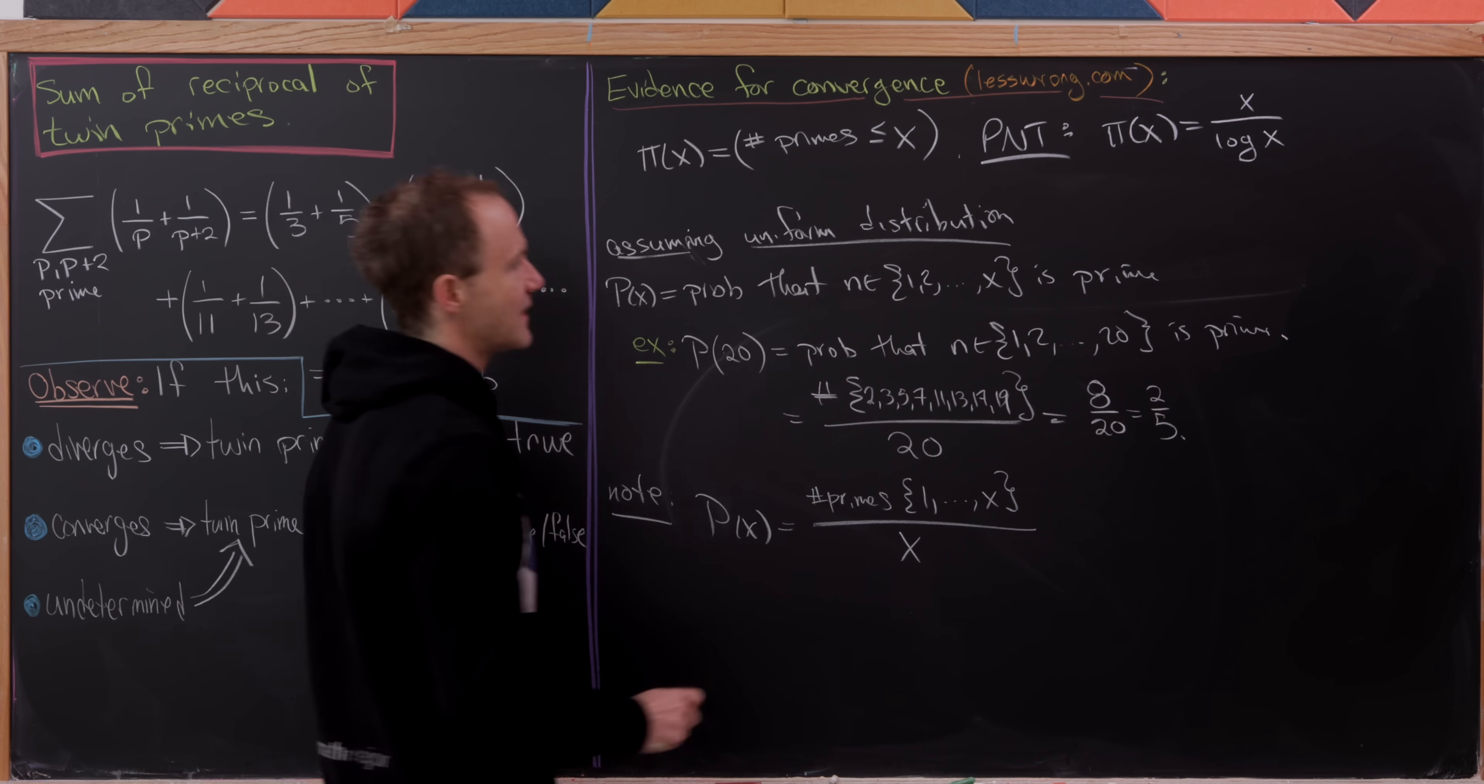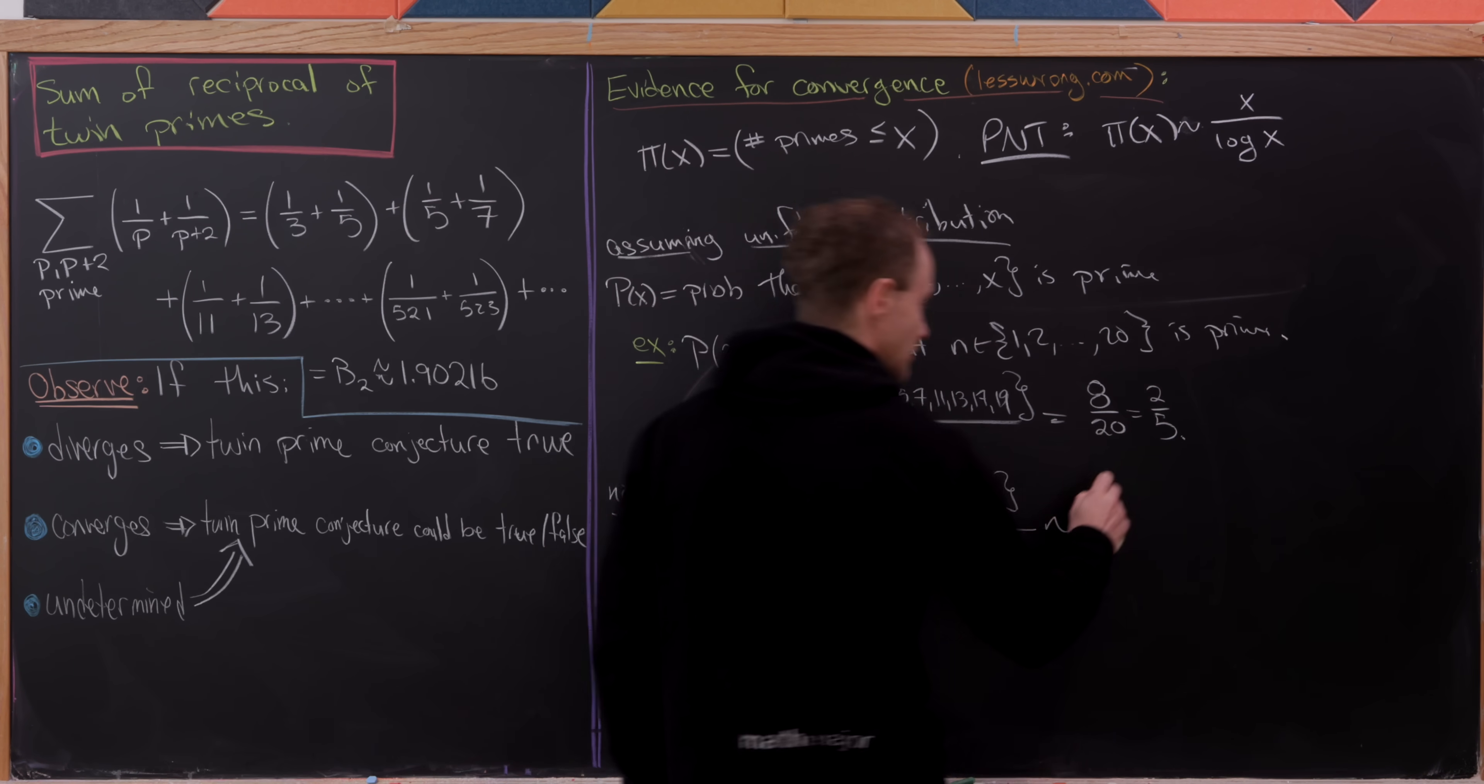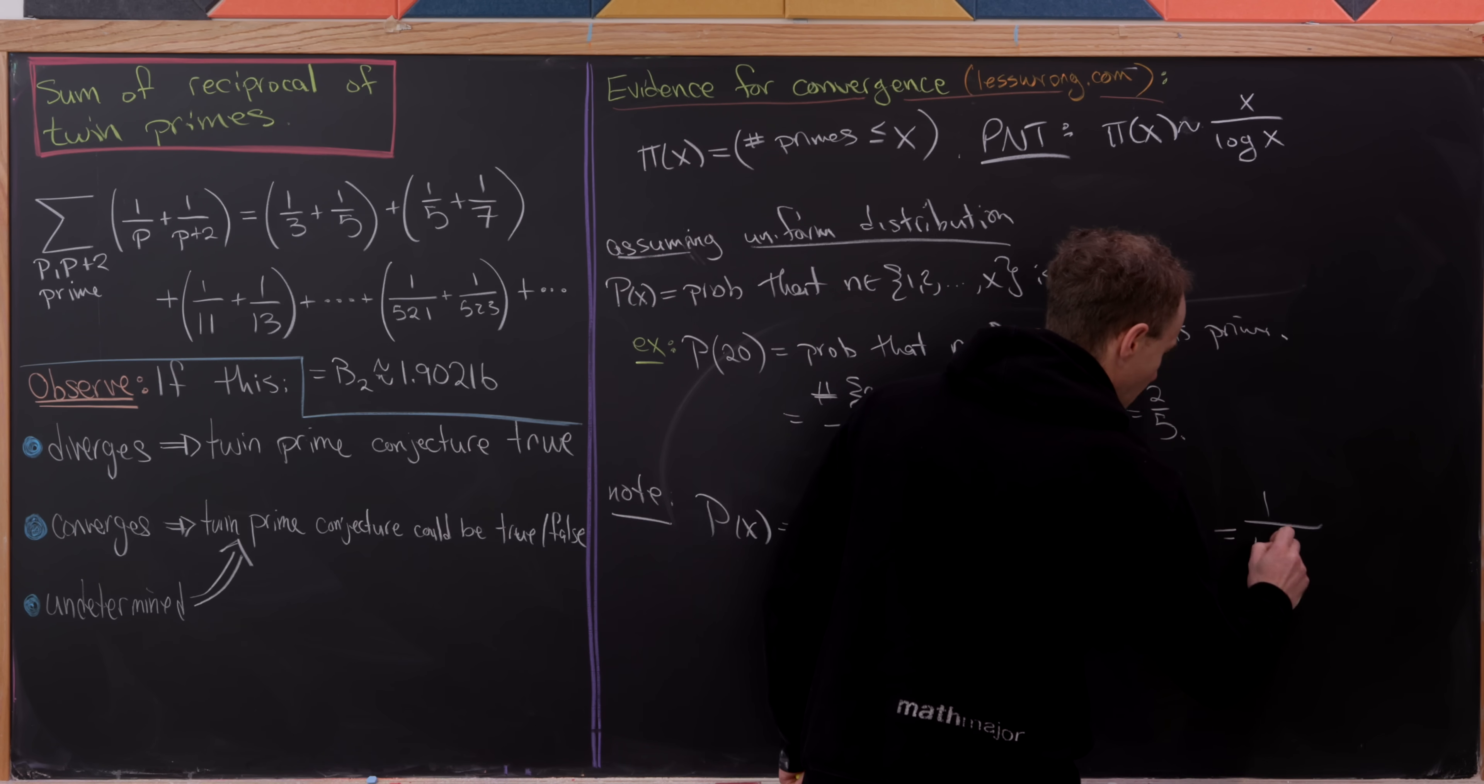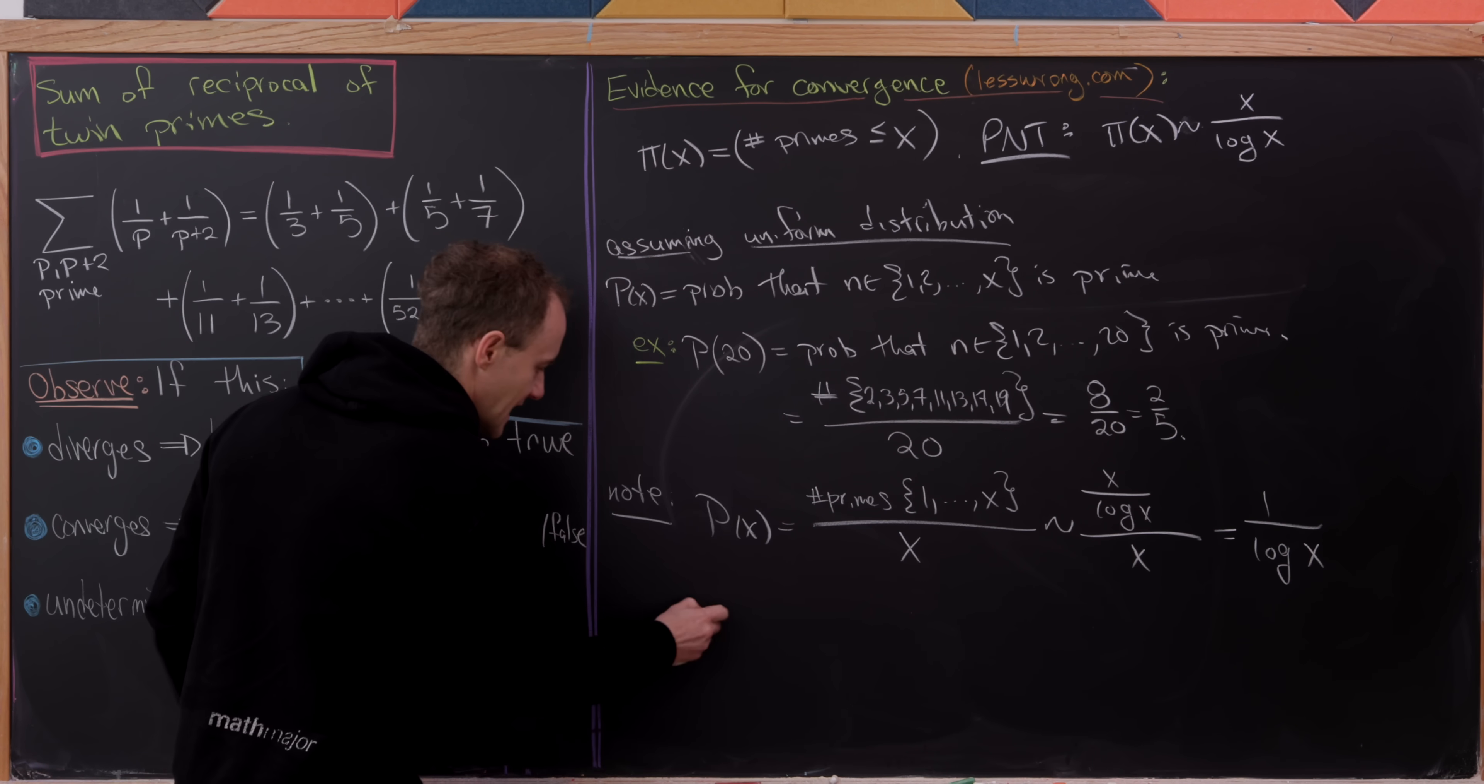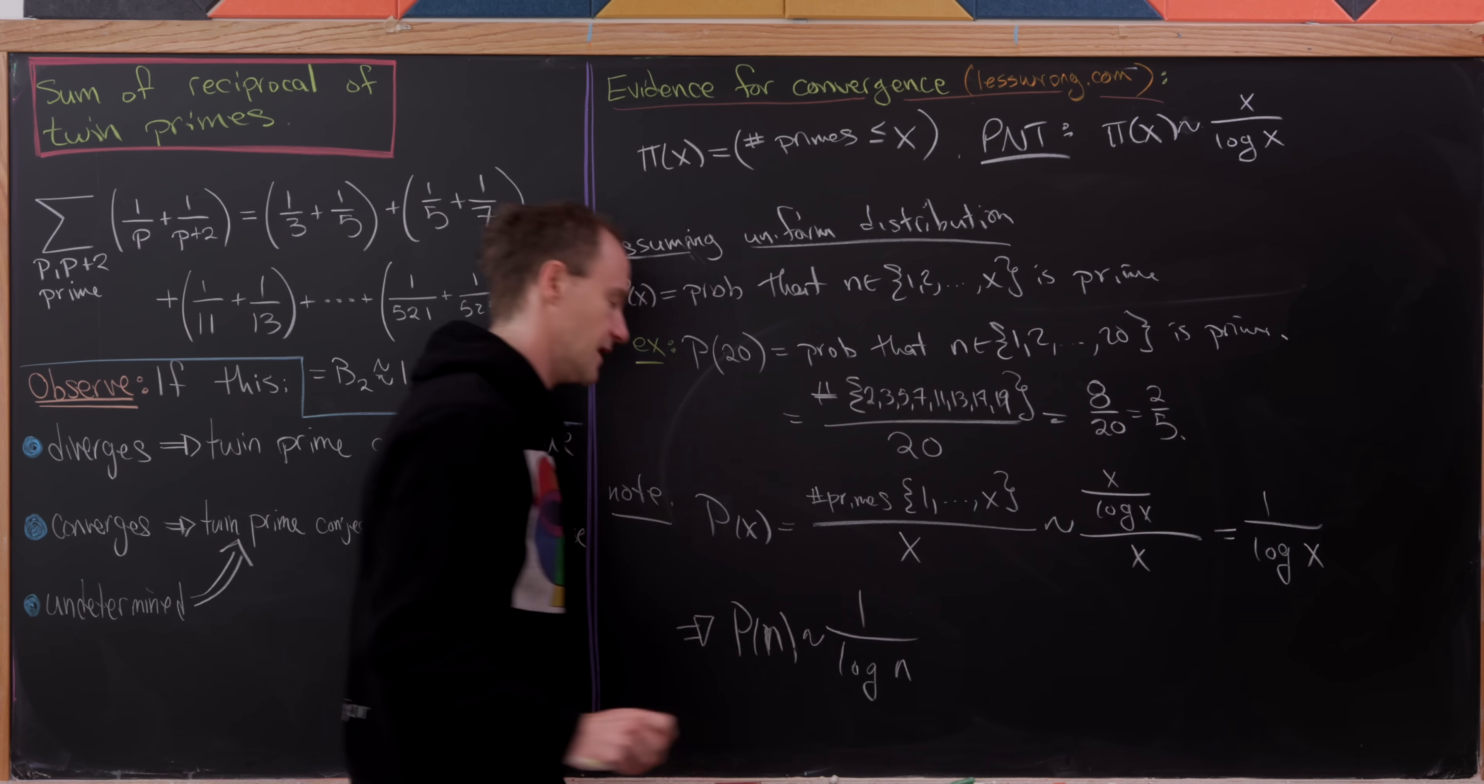But then by the prime number theorem, and this should have been an asymptotic relationship not an equality, this is asymptotic to x over log x in the numerator and x in the denominator, or 1 over log x. So the probability that n is prime goes like 1 over log n.